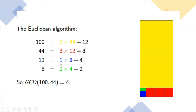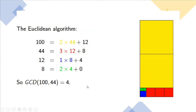When doing 8 divided by 4, two times 4 go in, so the green part divides into two equal parts of 4 units each, giving remainder 0. Once we get remainder 0, the divisor at that step is the GCD of the two numbers. So GCD(100, 44) = 4. This is how we calculate GCD of two numbers using the Euclidean algorithm.